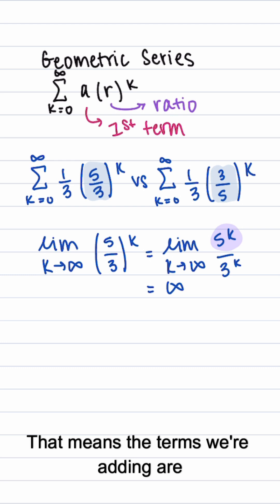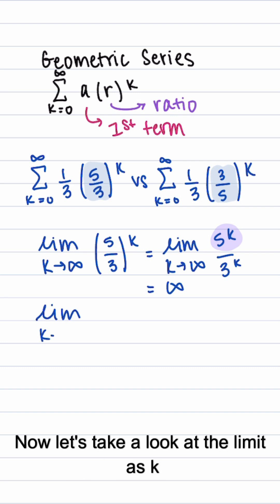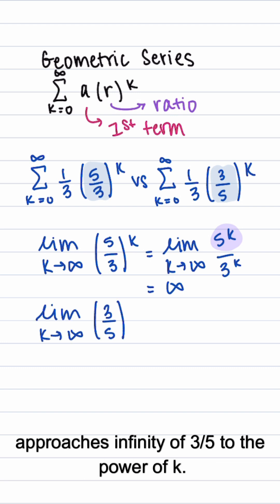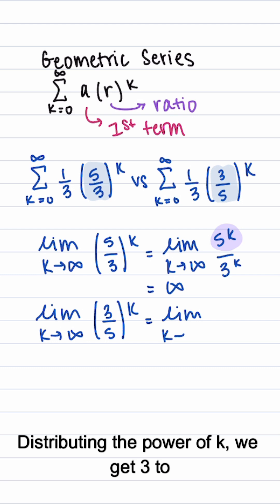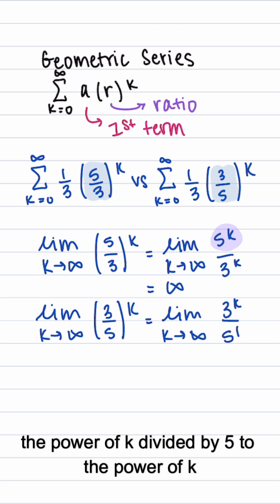That means the terms we're adding are getting bigger and bigger, so this series is going to diverge. Now let's take a look at the limit as k approaches infinity of 3 fifths to the power of k. Distributing the power of k, we get 3 to the power of k divided by 5 to the power of k.